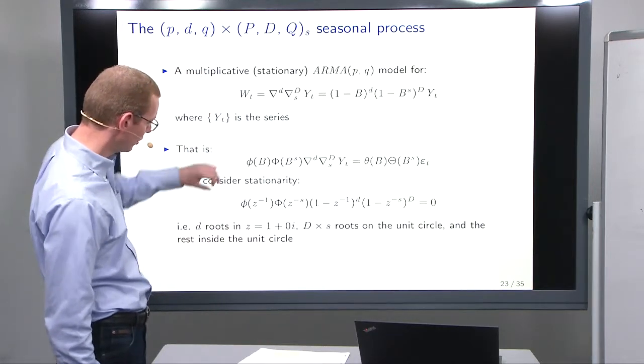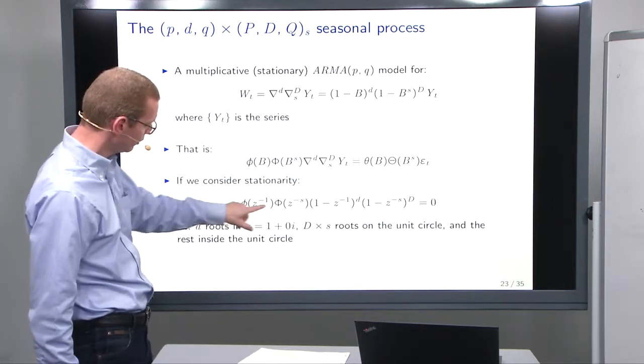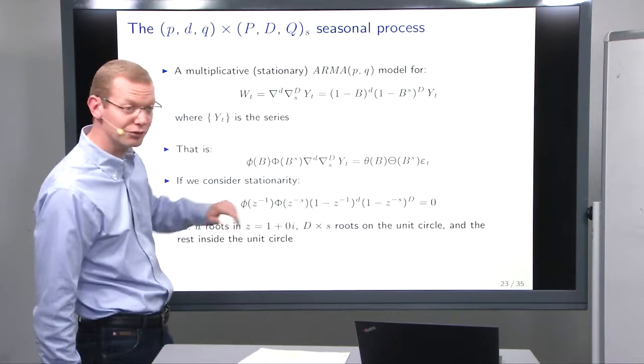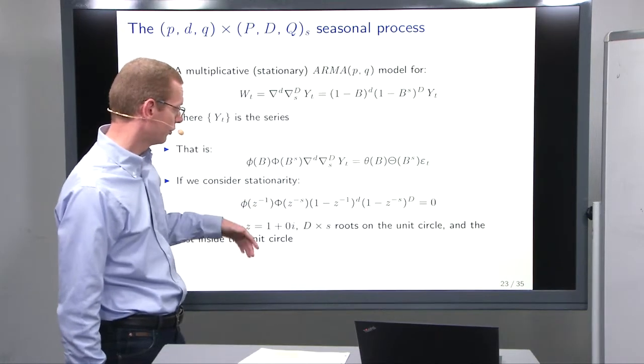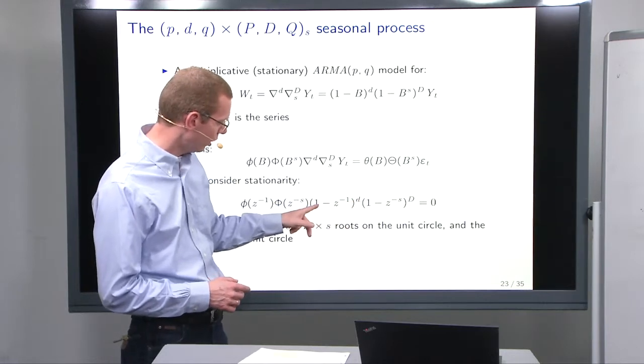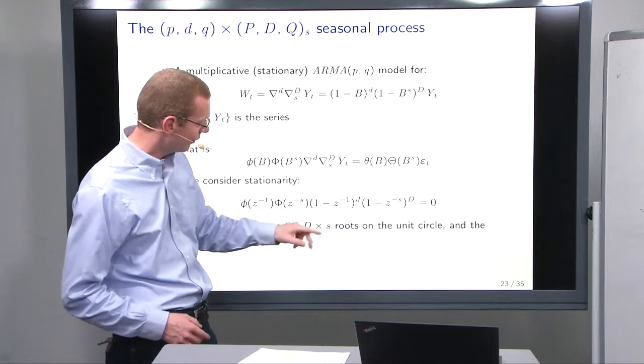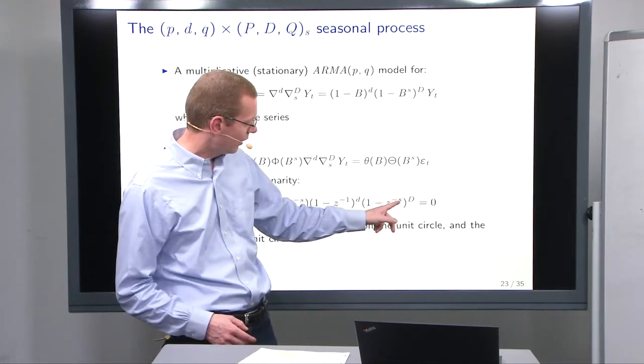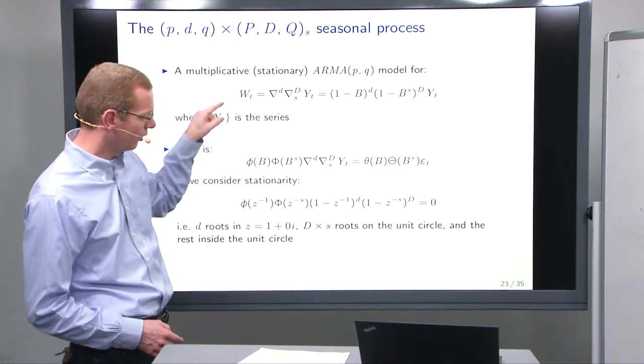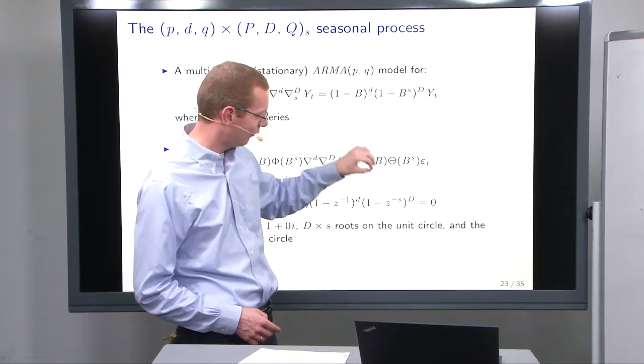And if we look at the roots, we have the roots for the pure AR part, and for the seasonal AR part, they are considered to be stationary. So, they are inside the unit circle. Then we have d roots in 1, as for the pure ARIMA case. And then we have a sequence of s roots distributed along the unit cycle. And we have D of each of them.